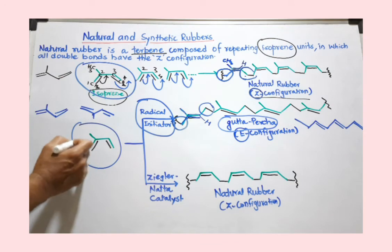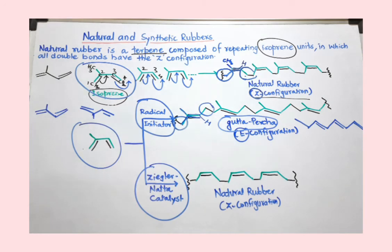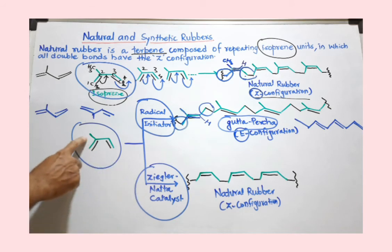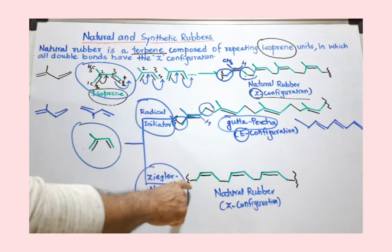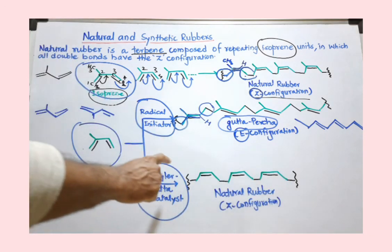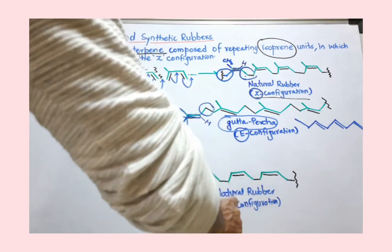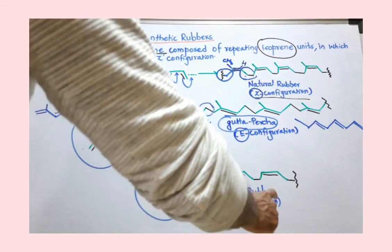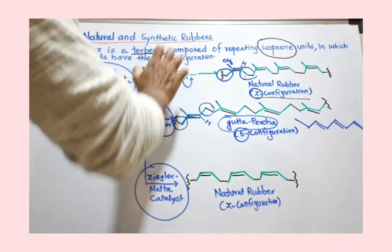If the same isoprene units are joined together using Ziegler-Natta catalyst — for the mechanism you can watch my previous video — you use the same configuration of the isoprene unit as in natural rubber. By using Ziegler-Natta catalyst, the stereochemistry is kept the same as natural rubber, giving Z configuration. This synthetic rubber produced by Ziegler-Natta catalyst is also called Ziegler configuration rubber. I hope you understood natural and synthetic rubber. Thank you.